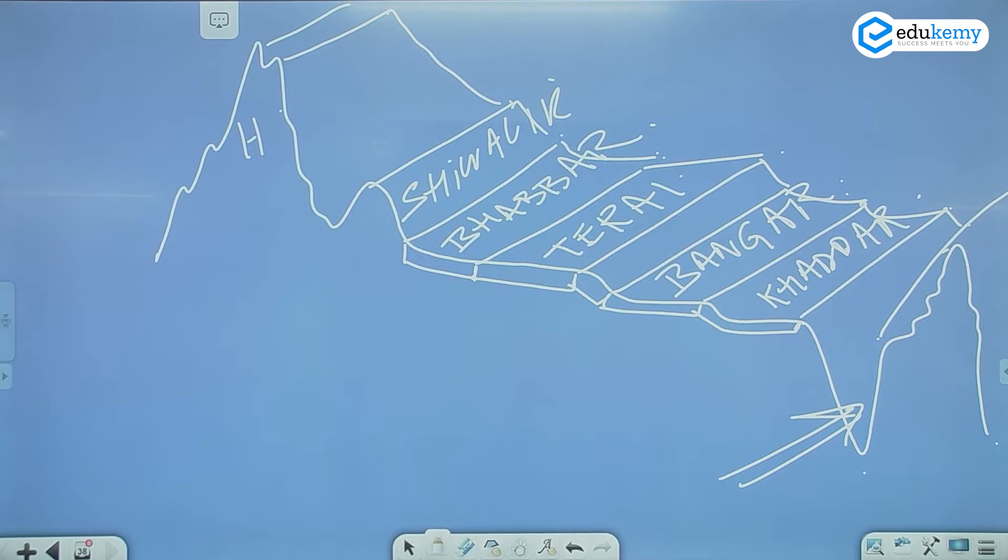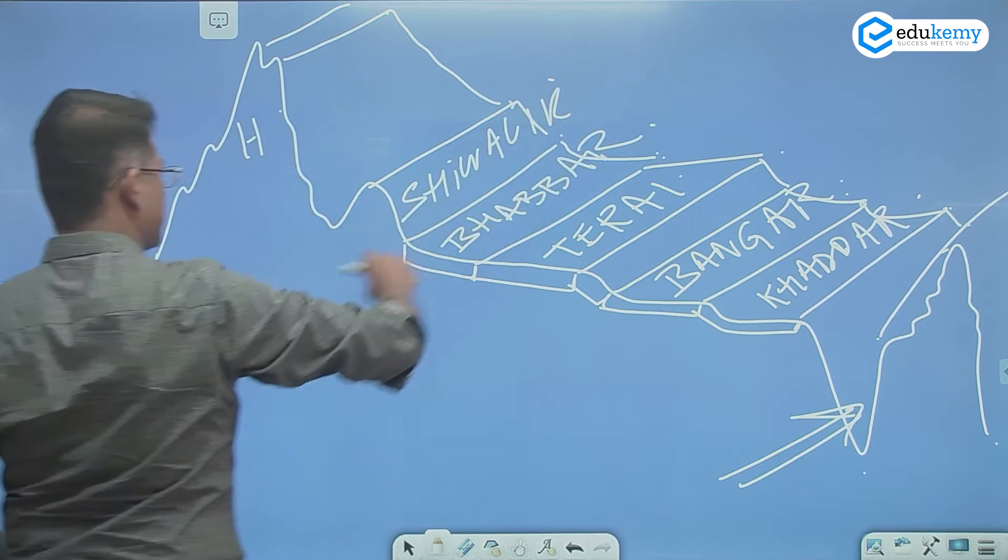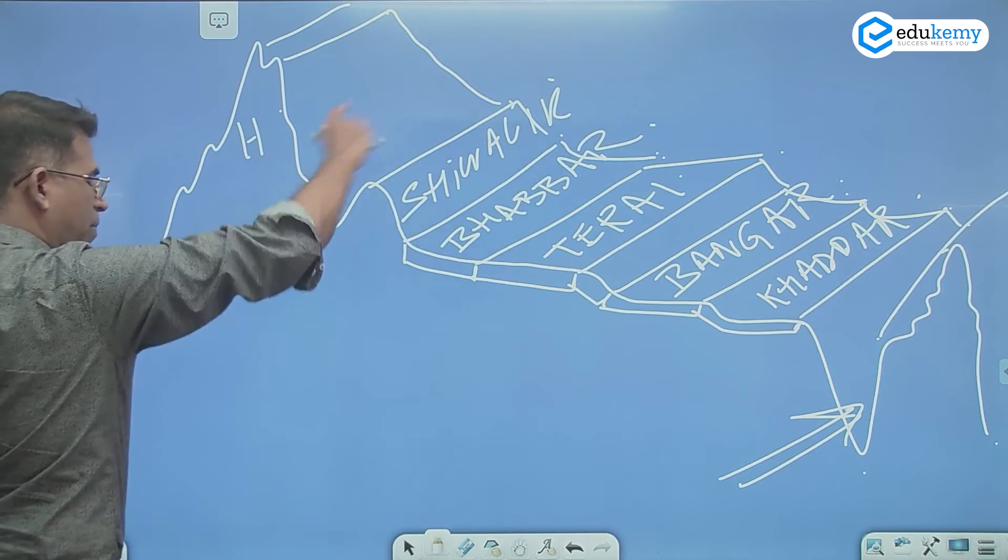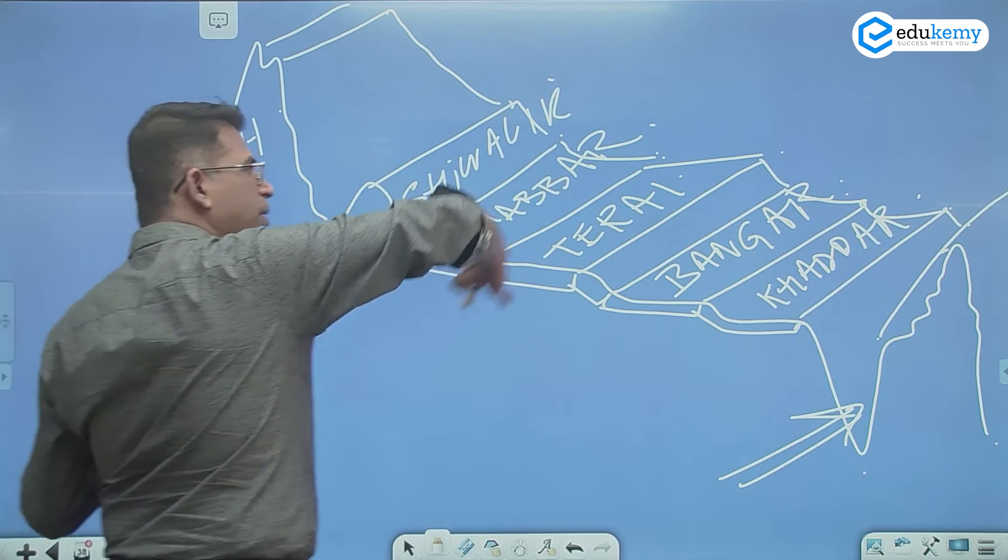Four divisions of northern plains, not towards south, and they are continuous belts. Starting from Punjab, UP, Bengal, Bihar, not Bengal, Bihar. Punjab, UP, they are continuous.